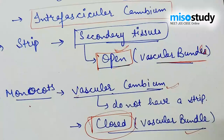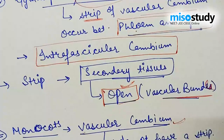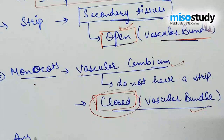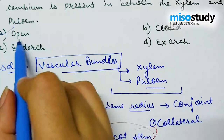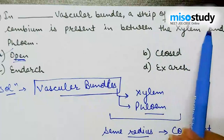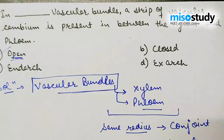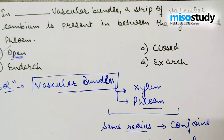So in dicots and gymnosperms, the vascular bundle is of open type. Option A — open — is the right answer. In an open vascular bundle, a strip of vascular cambium is present between xylem and phloem. Let's move on to the next question.